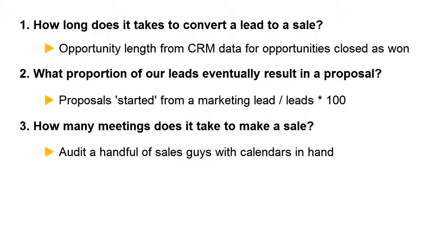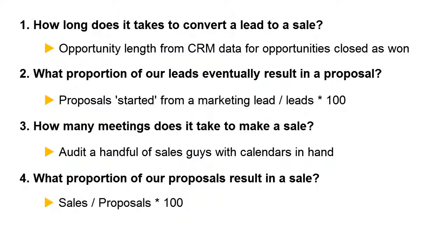And do we know our real closure rates? Get a list of every proposal that went out the door last year. Remove those that are still being worked on because we don't know whether we're going to win or lose. How many have been won? Wins divided by resolved proposals is your ratio. It's usually worse than the sales guys think.